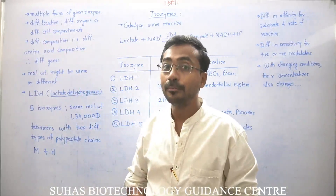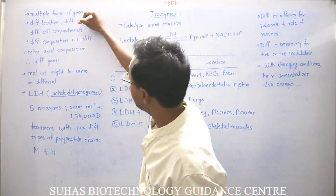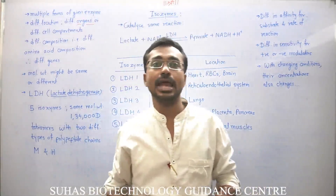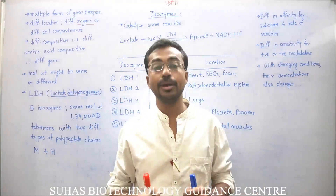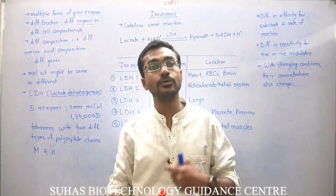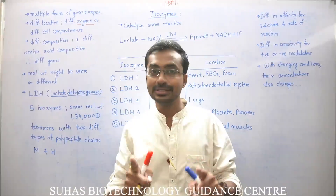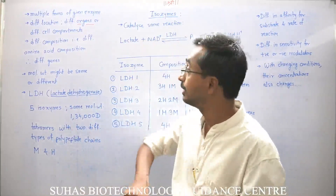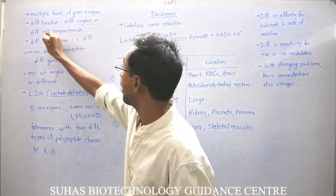These different forms of enzymes might be present in different organs. One particular form, E1, might be present in the brain, E2 might be present in the liver, and E3 might be present in the kidney. The enzyme is the same, catalyzing the same reaction, but its different forms are present in different organs.